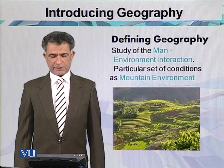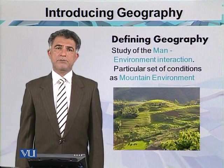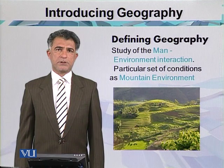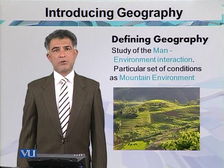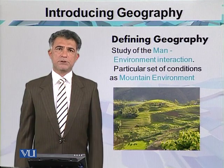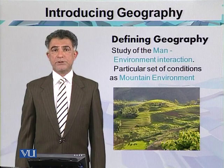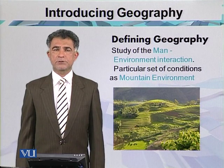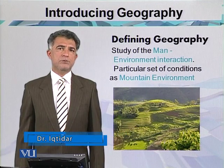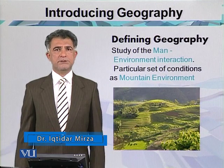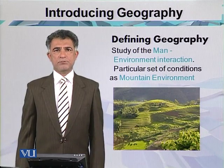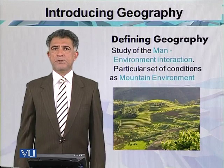When studying man-environment interaction, we deal with the mountain environment. The mountain is one area where we can use this type of landform for mountain farming. In the northern area of Pakistan, where we have the highest mountains of the world, the north-western and north-eastern parts are covered with the Himalaya, the Karakoram, and the Hindukush. This area is suitable for mountain farming, producing vegetables and fruits. A particular type of environment has particular types of activities.